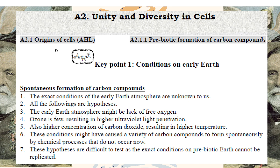The first topic is about where does the cell come from. We talk about what is the prebiotic formation of carbon compounds. First of all, we have to think about what are the conditions on the early Earth. Why are carbon compounds formed during the early days by spontaneous formation? Nothing before, and then they come out. The exact conditions of the early atmosphere are unknown to us — all these things are hypotheses. So we just have a blind guess.